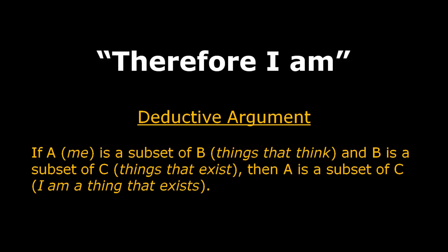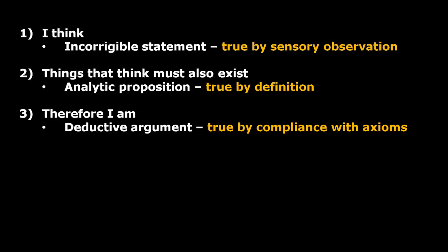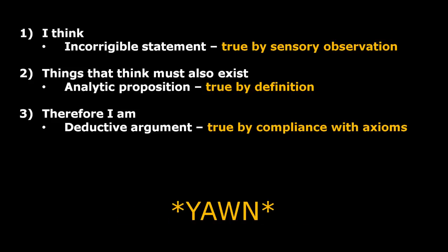Therefore I am is finally a deductive statement used to link the observation with its definition according to the axiomatic rules of set theory. Voila, you just proved Descartes' most famous theorem with complete 100% certainty. Whoopty freaking do.